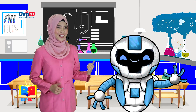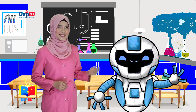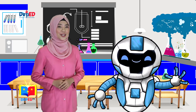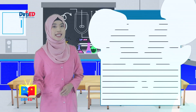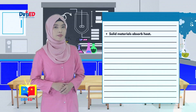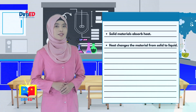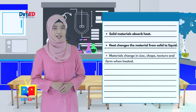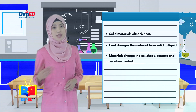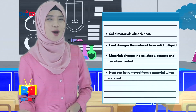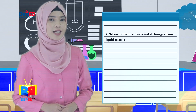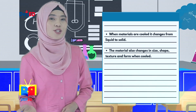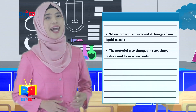Young scientists, before we proceed to our lesson today, let us recall our lesson from our previous episode. Look who's here — we have our dear friend, Tech Machino! There are changes in the properties of materials when they are heated or cooled. When a solid material is heated, it absorbs heat, causing the material to change its form from solid to liquid. It also changes in size, shape, texture, and form. When a solid material is cooled, it releases heat, causing it to change from liquid to solid, and it also changes its size, shape, texture, and form.